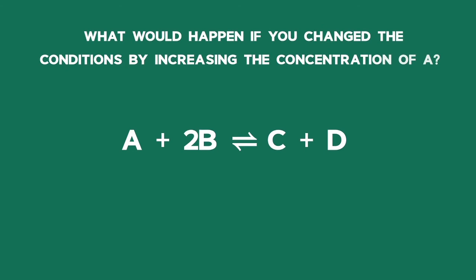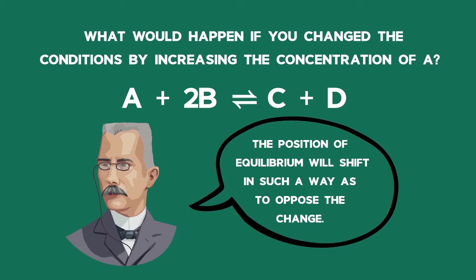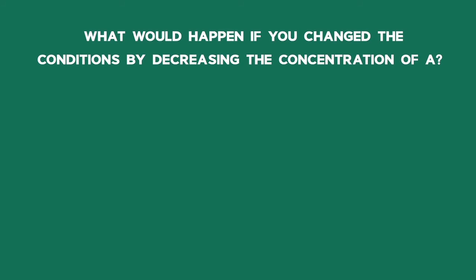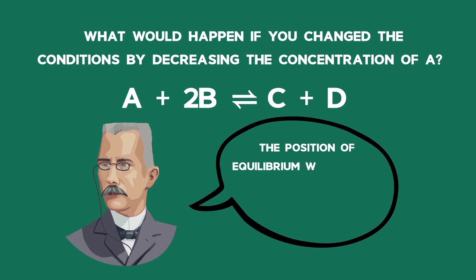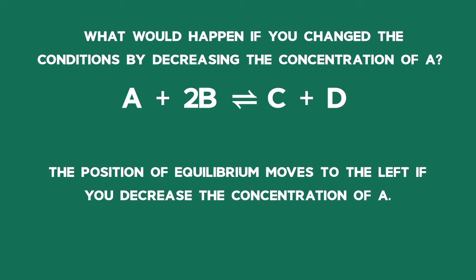What would happen if you change the conditions by increasing the concentration of A? According to Le Chatelier, the position of equilibrium will shift so that the concentration of A decreases again. We say that the position of equilibrium shifts to the right, favouring the forward reaction. What if you decrease the concentration of A? The position of equilibrium will shift so that the concentration of A increases again — more C and D will react to replace the A removed. The equilibrium shifts to the left, favouring the reverse reaction.